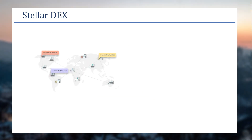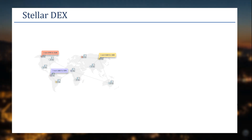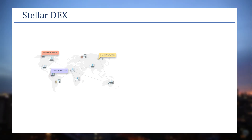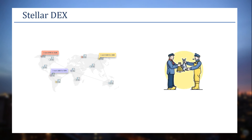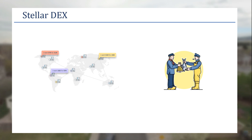Stellar DEX is the decentralized exchange of Stellar, similar to decentralized exchanges elsewhere, but built natively inside the chain. It has an order book containing buy orders and sell orders, which automatically matches buy orders with sell orders. You can also build any unique assets on Stellar because it is a very easy process — you can even use Stellar Laboratory to build these assets — and we'll do future tutorials on how to build these things.